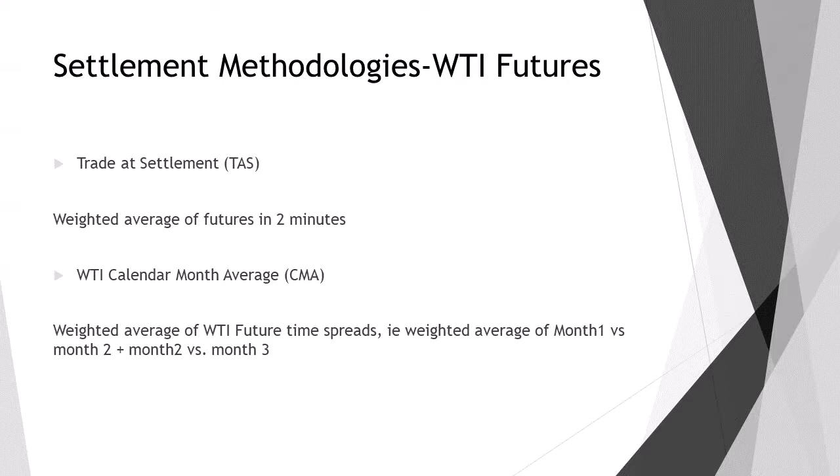WTI also has the WTI calendar month average, which is actually a price for the time futures. Specifically, this is the weighted average of WTI future time spreads — i.e., the weighted average of month one versus month two, plus the weighted average of month two versus month three, and then the weighted average of the two combined. This price is used as a reference for physical traders and is commonly used in the US market in particular.